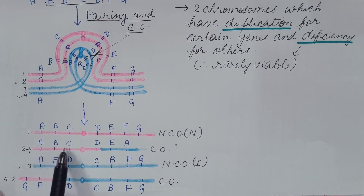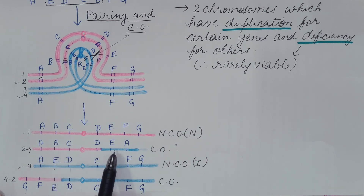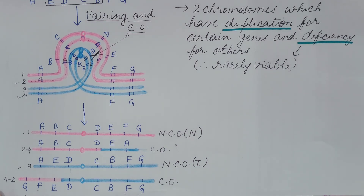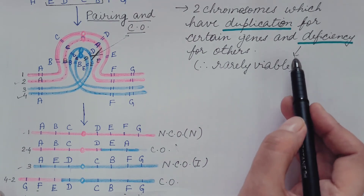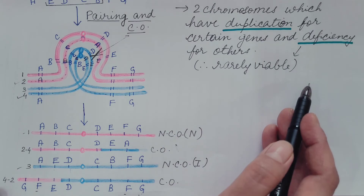In the first crossover product (A, B, C, D, E, A), gene A is present in duplicated form and B, C, D, E are present, but F and G are absent. In the second crossover product (G, F, E, D, C, B, F, G), G and F are present in duplicated form and E, D, C, B are present, but A is not present. Due to the deficiency of genes, these crossover products are rarely viable.